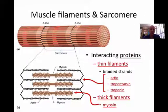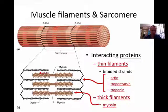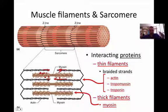Here's a blown-up view of a sarcomere. The thin filaments are usually referred to as actin, and the thicker filaments are myosin. The myosin has little heads on it — you can see these little heads on each side. These heads are going to be used to grab hold of the actin, and they'll actually slide these filaments in and out, relaxing and contracting.